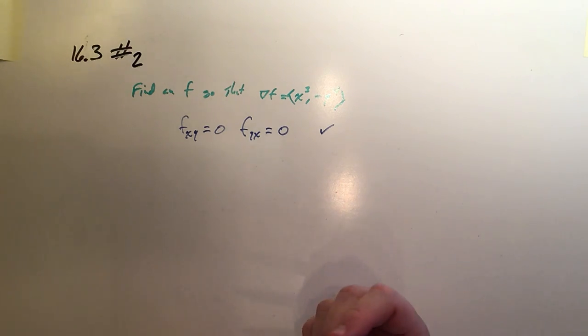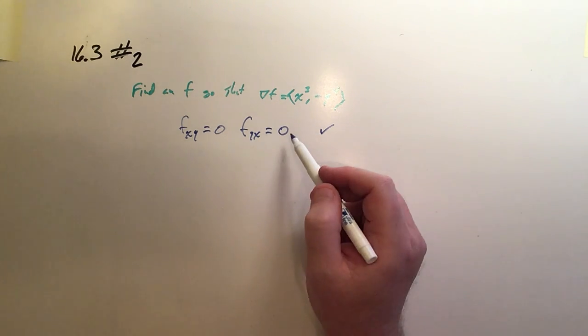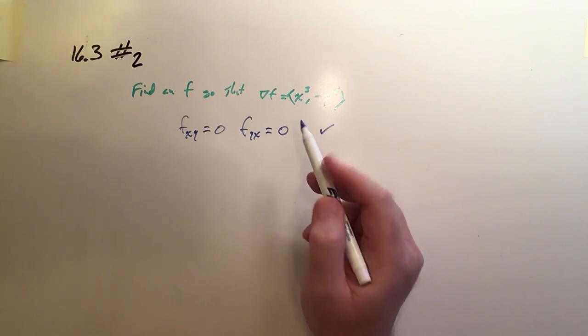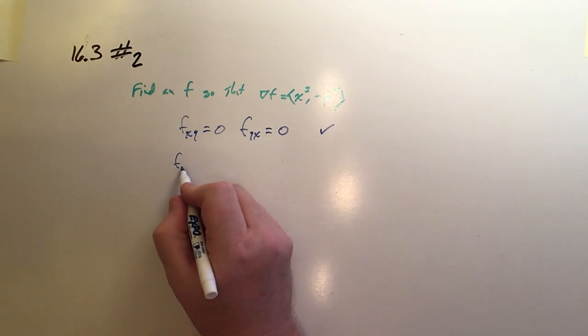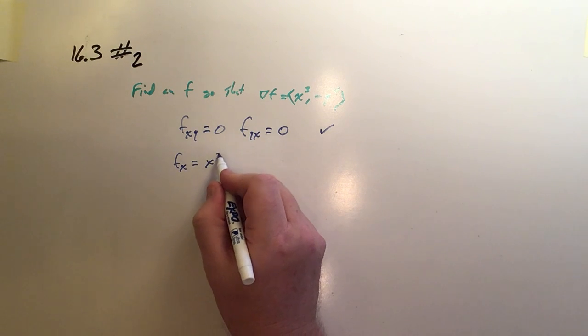So the question is, what is it? Well, here's the trick. We already know that this right here is the first partial for f. So we go f_x is equal to x^3.